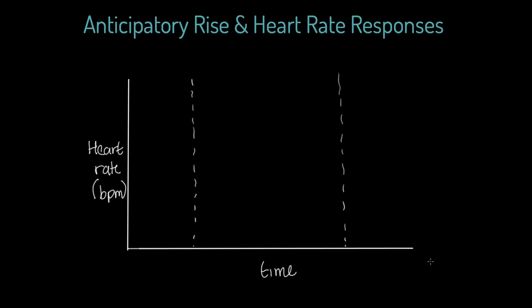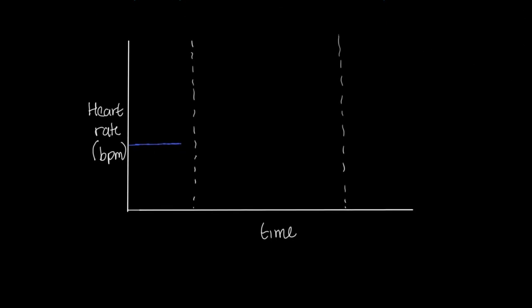First things first, we're going to illustrate a resting heart rate. I'll mark this in blue — this blue color represents rest. For most people, rest is going to be 60 to 80 bpm. I haven't put values on the y-axis, but let's imagine that is 70 beats per minute for argument's sake.